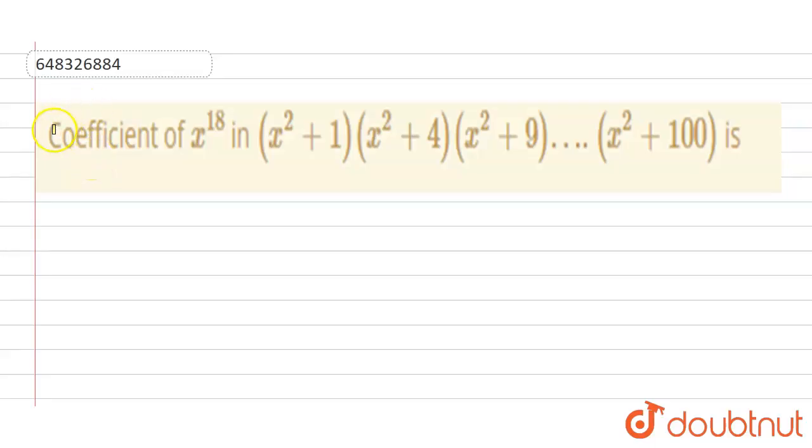Hello everyone, here we have question given that coefficient of x raised to power 18 in x square plus 1 into x square plus 4 into x square plus 9 up to so on x square plus 100 is.